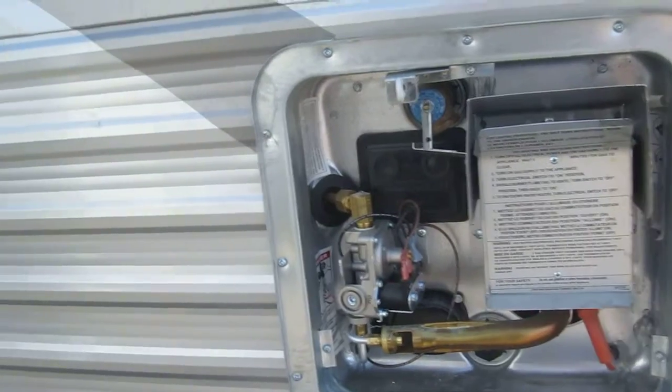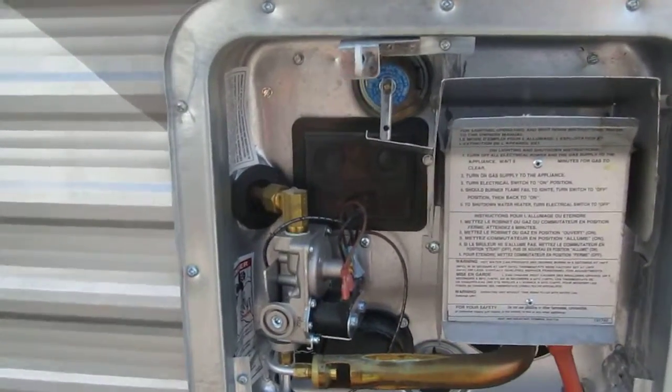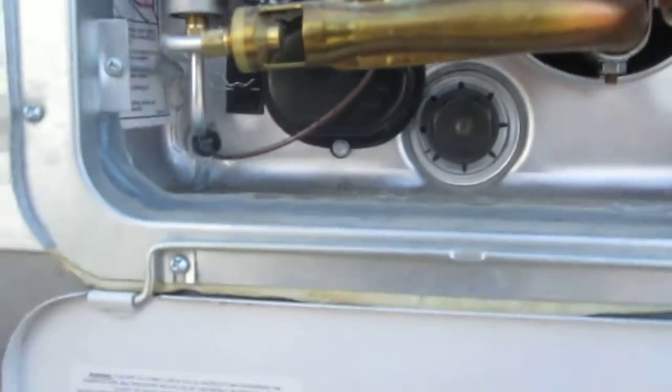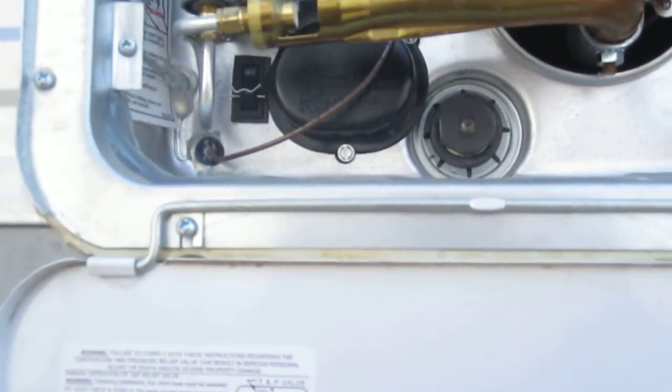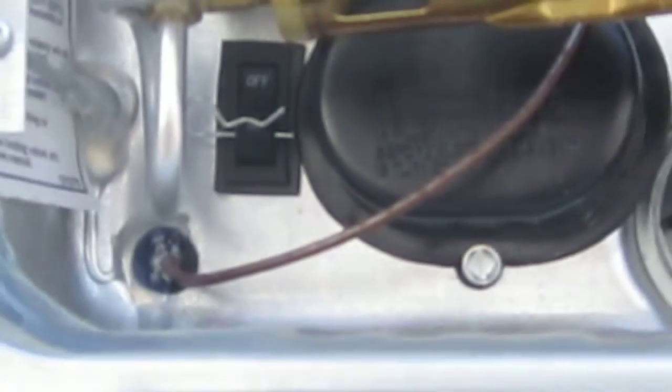The electric heating element switch is on the outside of the camper in the lower left hand corner. It's that little switch right there with the cotter pin in it. Simply pull the cotter pin and it'll operate 110 when you flip the switch down.